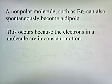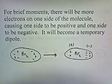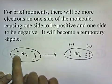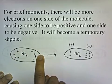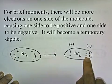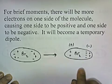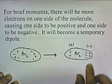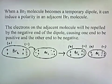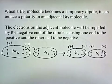A non-polar molecule such as Br2 can also spontaneously become a dipole, because the electrons in a molecule are in constant motion. For brief moments, there will be more electrons on one side of the molecule, causing one side to be positive and one side to be negative — it becomes a temporary dipole. The electrons are in constant motion, and sometimes randomly for a brief moment the electrons favor one side. In the picture, you may have two electrons on each side, but as they move around, you can get a concentration of electrons on one side, making that side negative and the other side positive. For a brief moment there's a disparity in the distribution of charge: more negative on one side, more positive on the other.